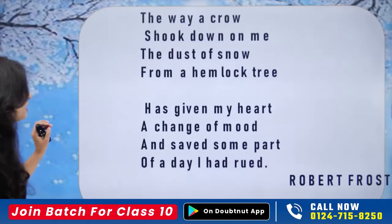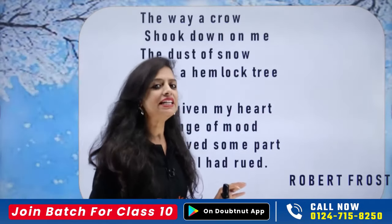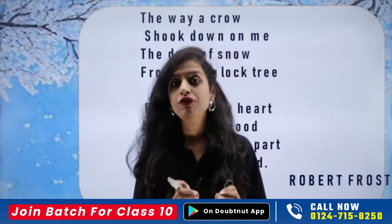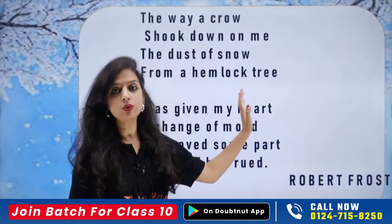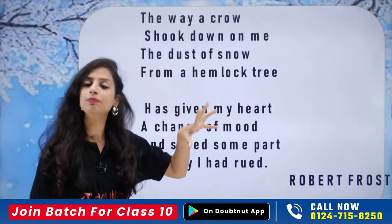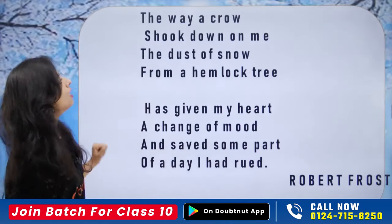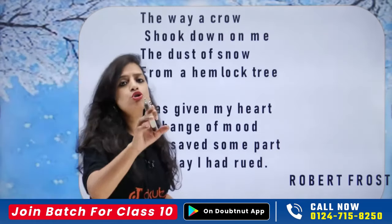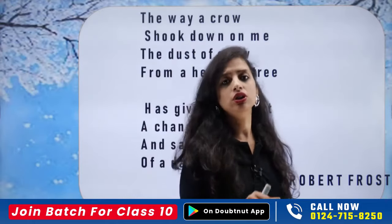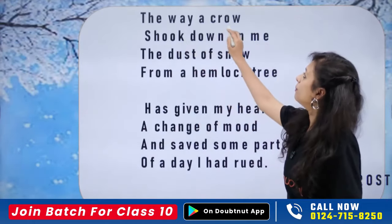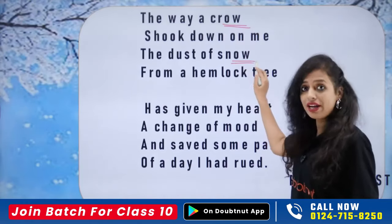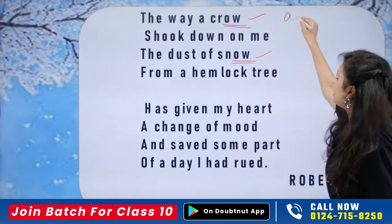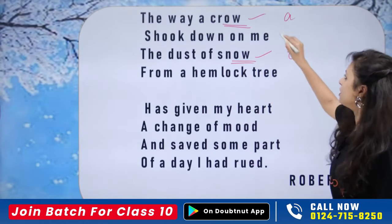Moving ahead with the poem — see how short this poem is, yet how deep its meaning is. Don't just go for the literal words; try to understand their deep meaning. The poem begins: 'The way a crow shook down on me / The dust of snow from a hemlock tree.' Now, you might wonder about the rhyming scheme. Here 'crow' and 'snow' rhyme — so this is A, A. Then 'shook down on me' and 'tree' rhyme — so this is also B, B.